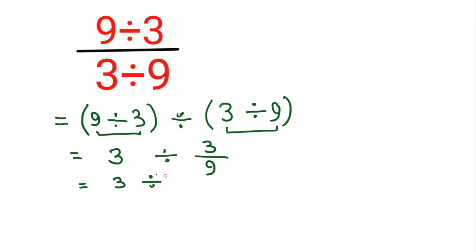So 3 divided by, its cancellation, 3 threes are 9, so 1 by 3. Here we apply the KCF rule: keep it, change it, it is division so it will be multiplied, and flip it. 1 by 3 is flipped so it will become 3.